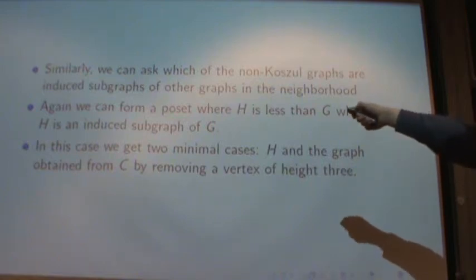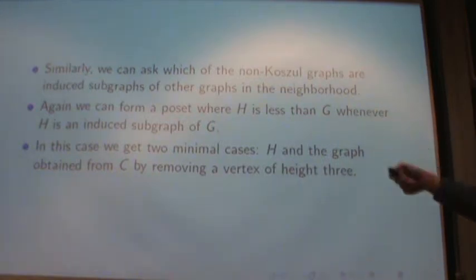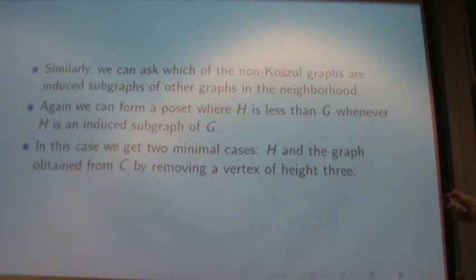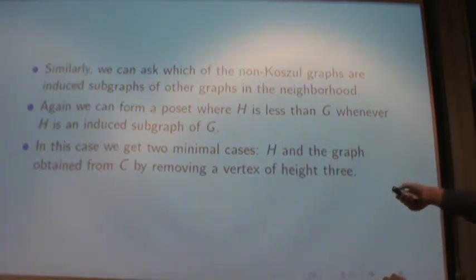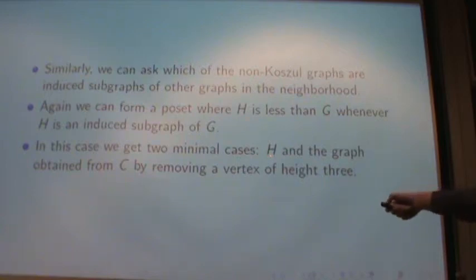What other relations did you have between graphs? The induced relation. So we can take H is less than G whenever H is an induced subgraph of G. Which means you can pull out vertices and pull out all the edges connected to that vertex. But you can't just take out an edge if you feel like it. So if we do the induced relation, what do we get? We get two minimal cases, H and the graph we saw before, which is the Cassidy-Shelton poset with one vertex removed. And that's what we get. This and this.